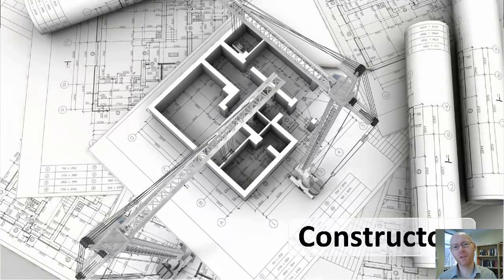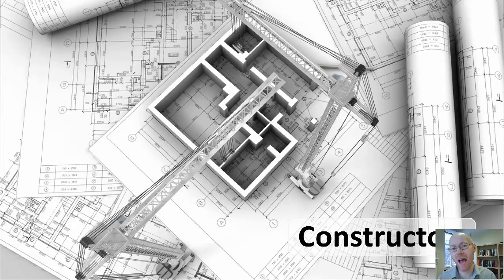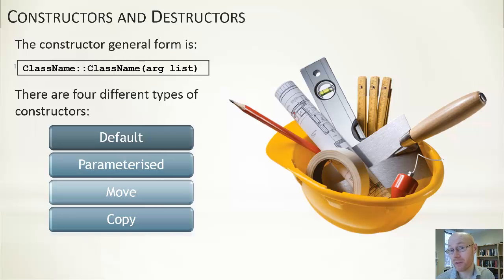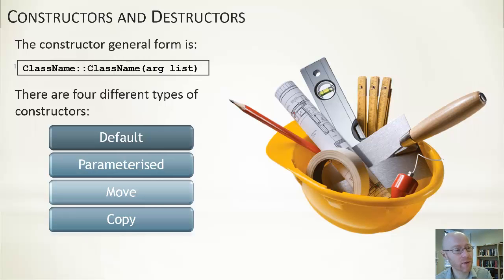We're going to start off, certainly in this part one, looking at all of the different options that we have for constructing classes within C++. The structures we'll look at in the second part of the video. There are four different types of constructor within C++, and this compares to two types of constructor within, for example, Java. You can see the four of them here.